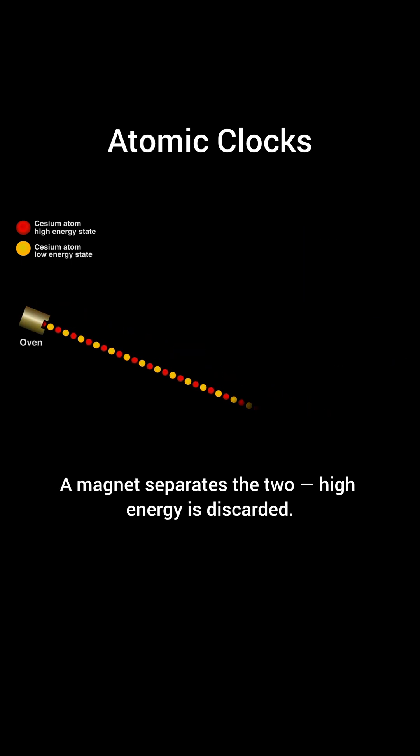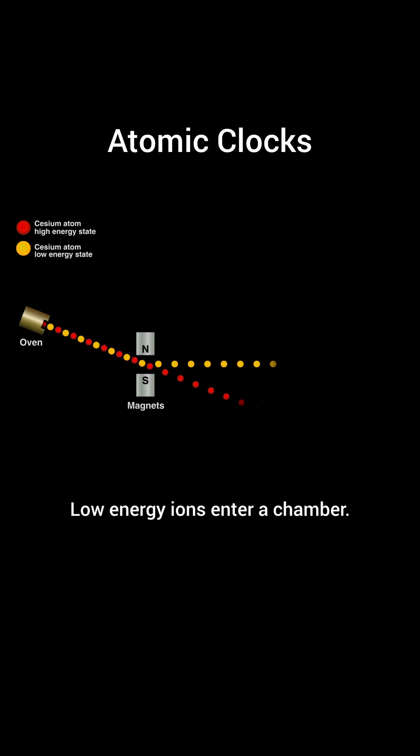A magnet separates the two. High energy is discarded. Low energy ions enter a chamber.